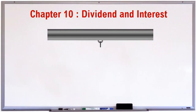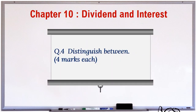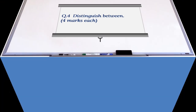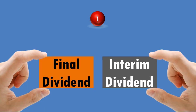Chapter 10: Dividend and Interest. Question 4: Distinguish between — 4 marks each. Part 1: Final Dividend and Interim Dividend.